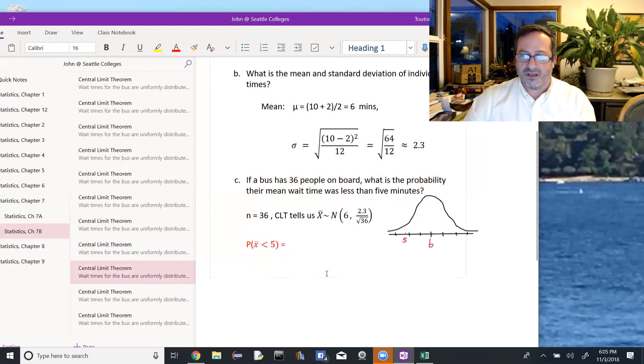So 5 is one unit away, so if that's 0.4, there's another 0.4, that'd be 0.8. And then about halfway in between would be 5, or a little less than halfway. So 5 would be about here. And I'm looking for the probability that the mean wait time is less than 5 minutes, so the probability that X bar is less than 5. And in the picture, that's going to be everything to the left of 5.